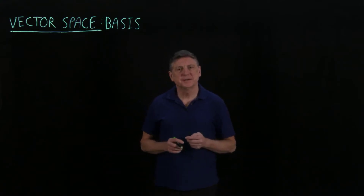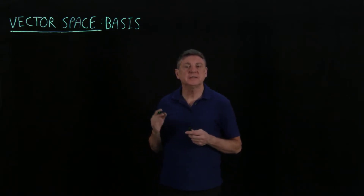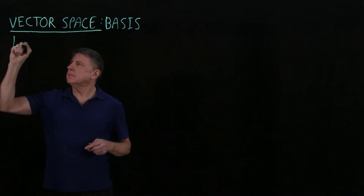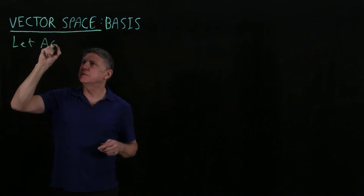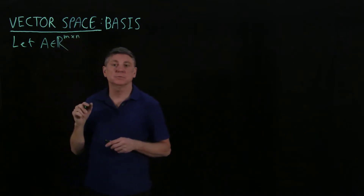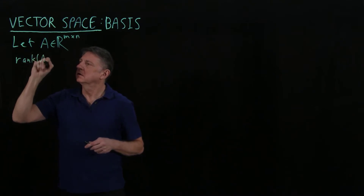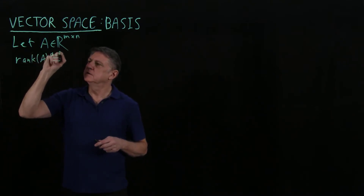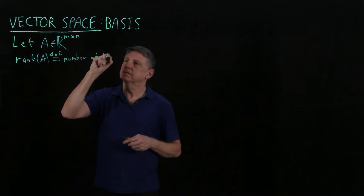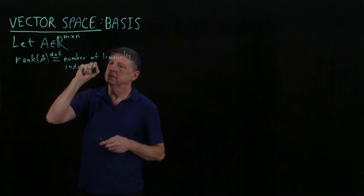Welcome. In this session on linear data analysis, we'll explore a basis and relate it to the rank of a matrix. Suppose that a matrix A has real number entries with m rows and n columns. The rank of A is defined as the number of linearly independent rows.